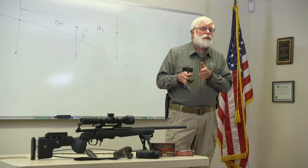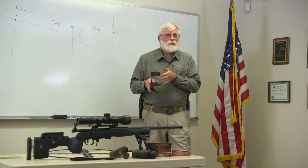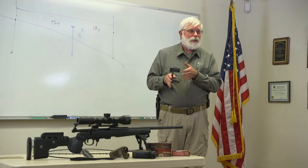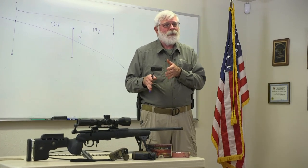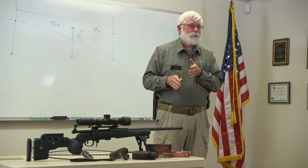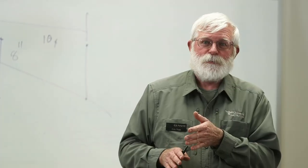At a thousand yards, the danger space for a 308 on a 12 inch high target is five yards behind and four yards in front. You don't have much room for error.